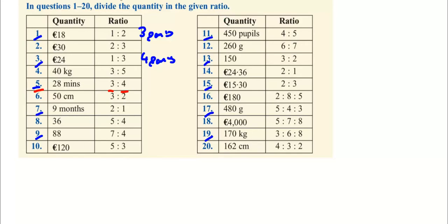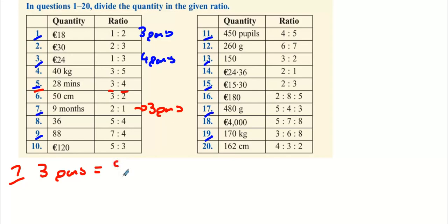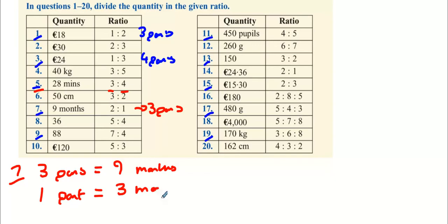Now we're on to questions seven, nine, and eleven. You should probably start trying them on your own now — you should be pausing the video. Question seven: two plus one is three parts, so three parts equals nine months. This implies that one part is three months, and two parts will be six months.